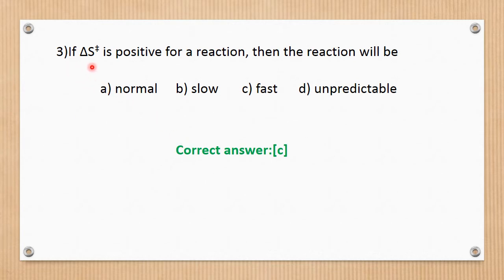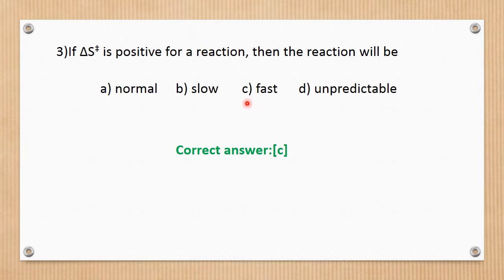Question number 3. If delta S is positive for a reaction, then the reaction will be: normal, slow, fast, or unpredictable? Delta S is positive and the reaction is fast. The correct answer is C.